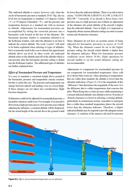Effects of Non-Standard Pressure and Temperature. It is easy to maintain a consistent height above ground if barometric pressure and temperature remain constant, but this is rarely the case. If an aircraft is flown from a high-pressure area to a low-pressure area without adjusting the altimeter, a constant altitude will be displayed, but the actual height of the aircraft above the ground would be lower than the indicated altitude. There is an old aviation axiom: going from a high to a low, look out below.